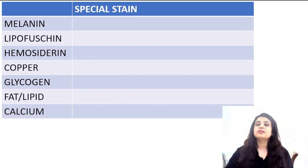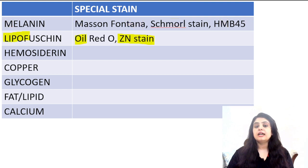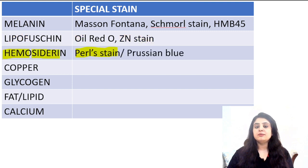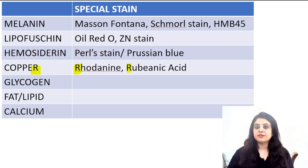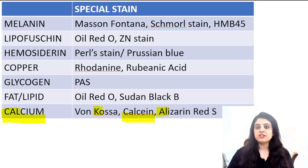Let's do a quick 60-second recap. Melanin: Masson-Fontana, Schmoll, and HMB-45. For lipofuscin: lipo — Oil Red O; fast — ZN stain. Hemosiderin, to do with iron: Pearls or Prussian blue. Copper, RRR: rhodanine and rubianic acid. Glycogen, favourite with the girls, pink colour: PAS. Fat: Oil Red O and Sudan black B. And finally, three stains for calcium: calcein, von Kossa, and alizarin red S.